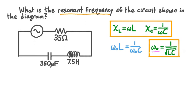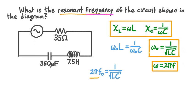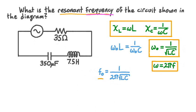Since we need regular frequency rather than angular frequency, we use ω = 2π × f. Substituting gives 2π × f₀ = 1/√(LC). Dividing both sides by 2π, the resonant frequency f₀ equals 1 divided by 2π times the square root of the inductance in henries times the capacitance in farads.